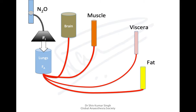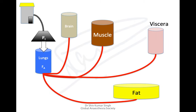When we breathe nitrous oxide, it's less soluble, so it very quickly equilibrates with the brain, and hardly anything goes into the muscle, viscera, or fat. But for sevoflurane, halothane, or other volatile anesthetic agents, they need to get into equilibrium with the brain. The FA/FI ratio — fraction of alveolar to fraction of inspired concentration — depends on the blood-gas solubility.